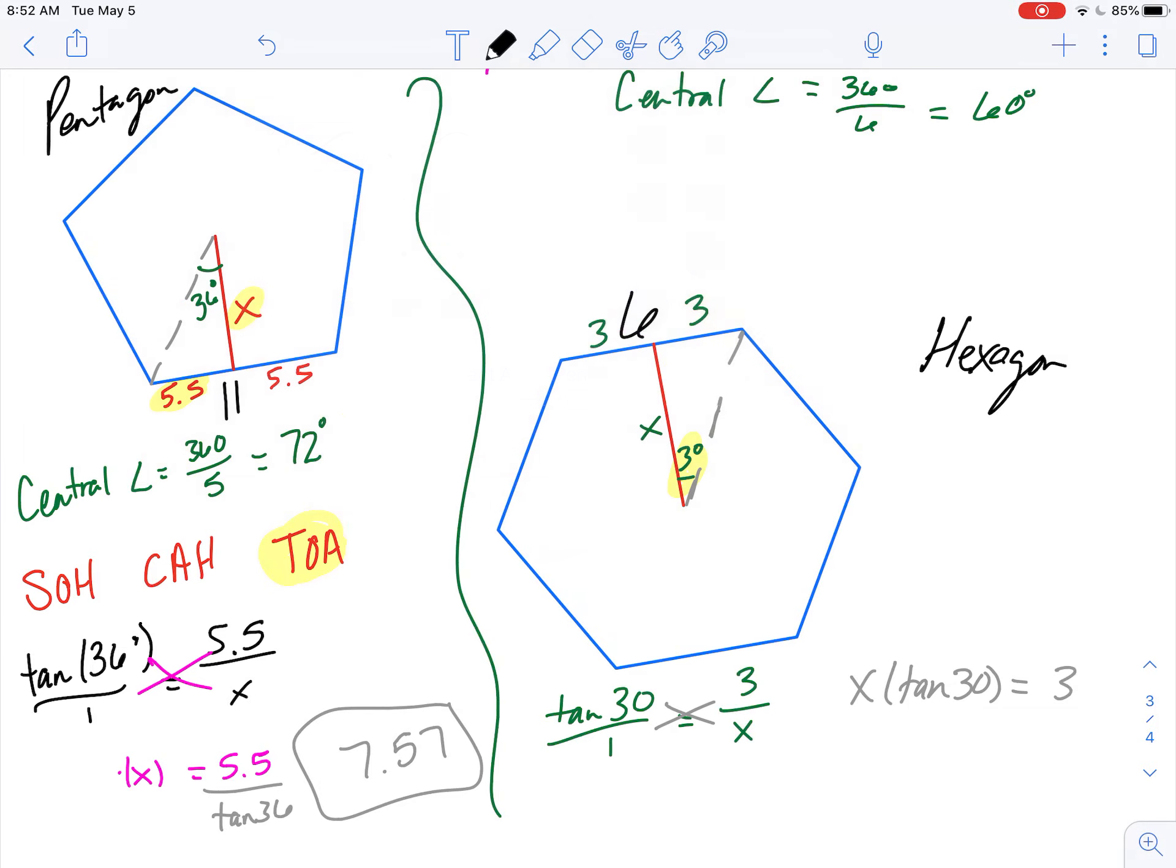In our very last step here, we want to get x by itself. So we'll divide by the tangent of 30, divide by the tangent of 30. And x equals, x equals 3 over the tangent of 30.